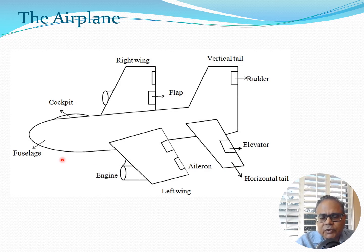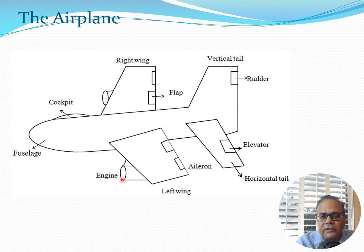The current airplane configuration is actually pretty standardized. You have the cockpit, the fuselage — where passengers sit or cargo is placed — the two wings, and the engines which hang from nacelles. You have the vertical tail and the horizontal tail, and as mentioned these are present for stability.